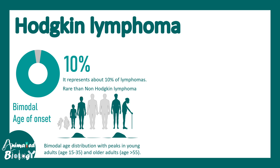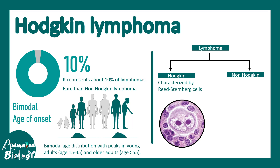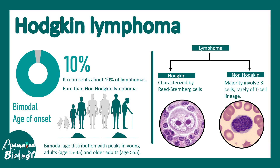It is much rarer than non-Hodgkin's lymphoma. It has a bimodal age onset — young adults aged 15 to 35, and those over age 55 are the two peaks. There are two types of lymphoma: Hodgkin and non-Hodgkin. Hodgkin's lymphoma is characterized by Reed-Steinberg cells, whereas the majority of non-Hodgkin's lymphoma generally involves malignancies of the B and T cell lineage.